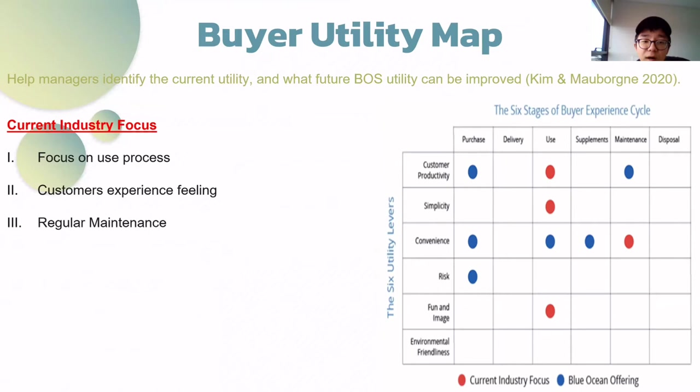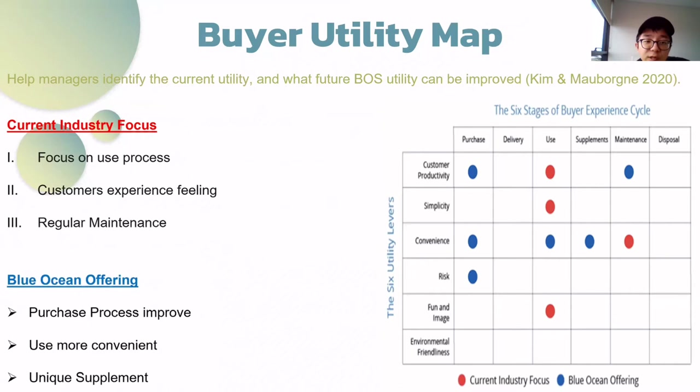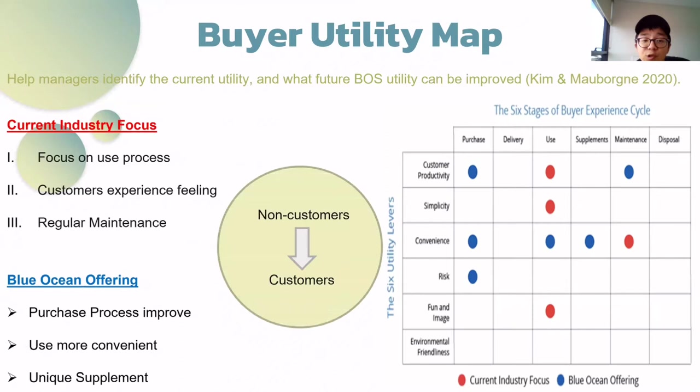After Blue Ocean Strategies is implemented, we predict that the customer purchasing process will be greatly improved and access will be diversified and more convenient. At the same time, we will also provide a unique supplementary solution to enhance ACN's competitiveness and make ACN stand out from its competitors. Therefore, managers can directly see how the utility changes through the utility map to help ACN convert non-customers into customers.